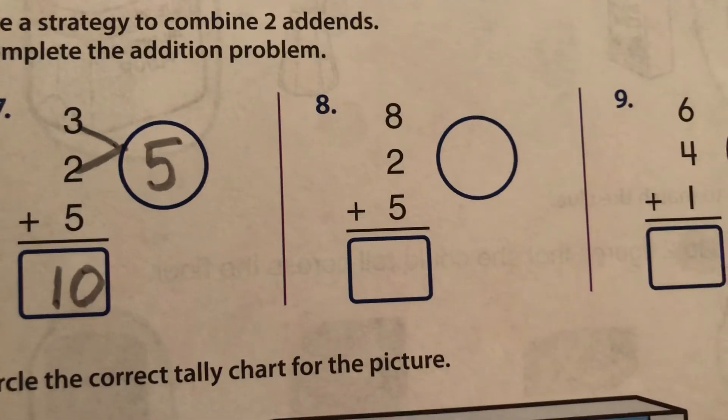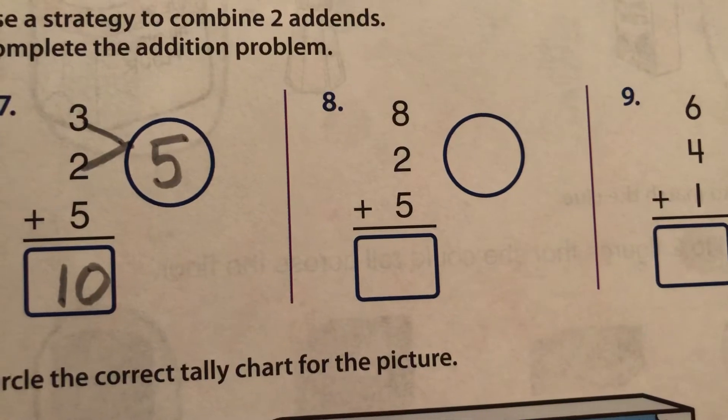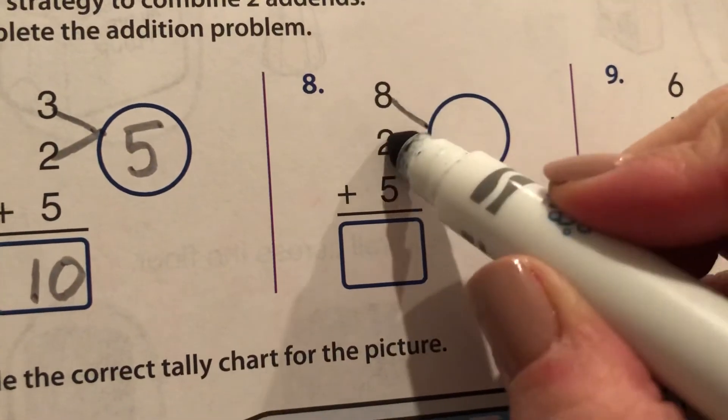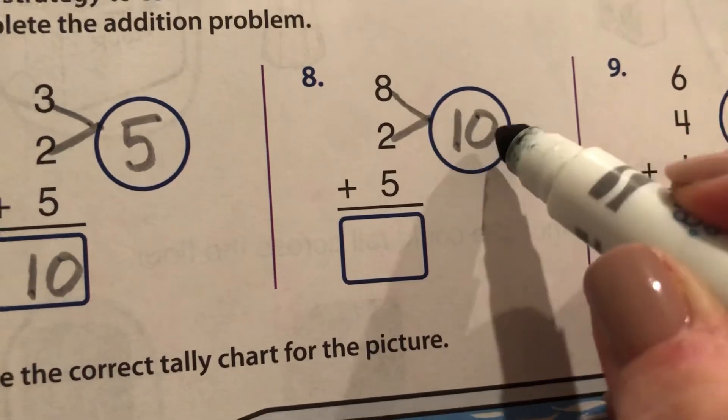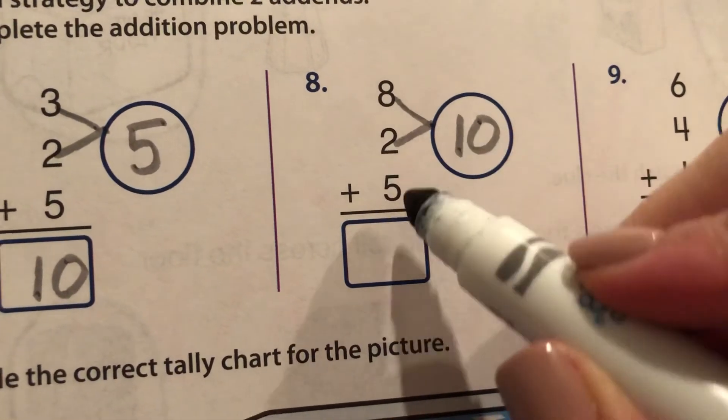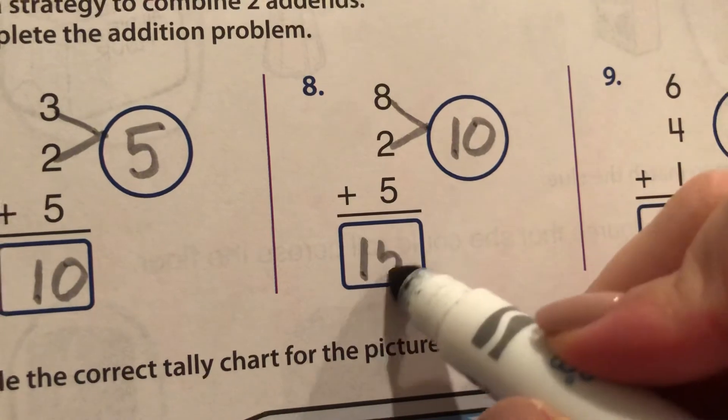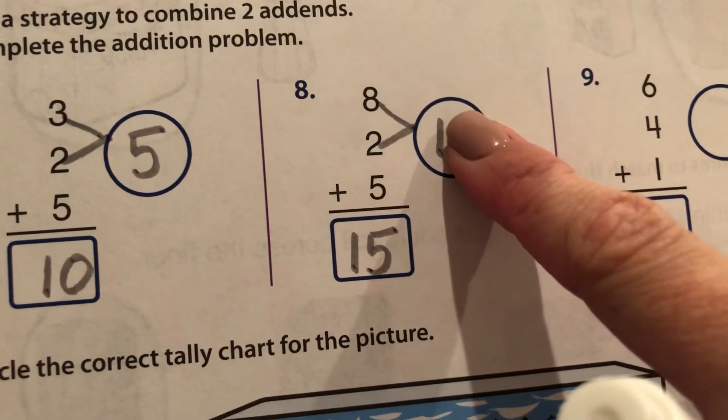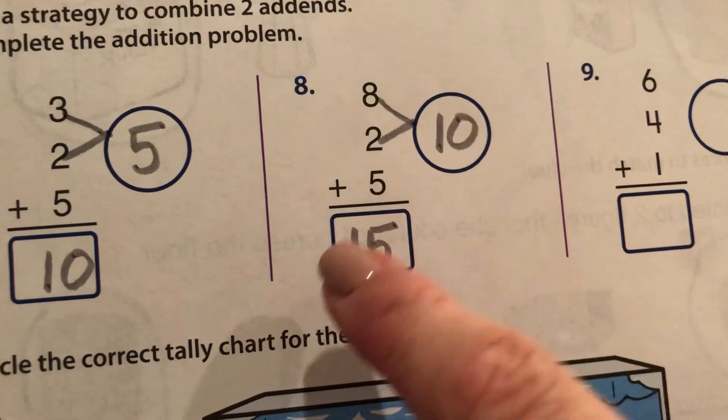Now for number eight, which two numbers could make 10? Eight and two make 10. And 10 plus five is 15. All you do is cover up the zero. One, five, 15.